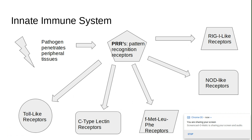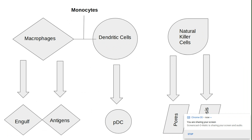RIG-I receptors sense double-stranded RNA, which is a crucial step in viral replication. Moving on, still in the innate immune response, we have monocytes, which include macrophages and dendritic cells.